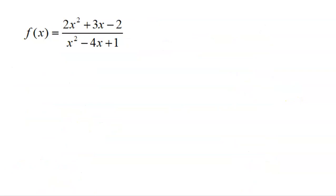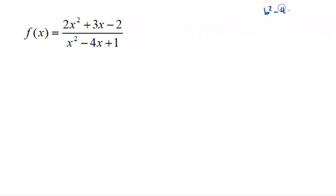Next example — the numerator is not factored. I'll use B squared minus 4AC to check if it's factorable. Taking three squared minus four times two times negative two, I get 25. Since 25 is a perfect number, the numerator can be factored.